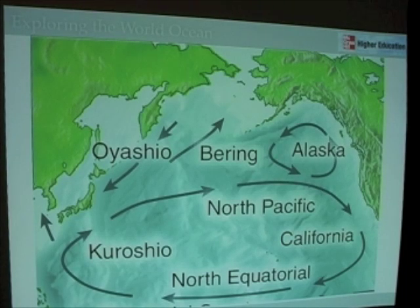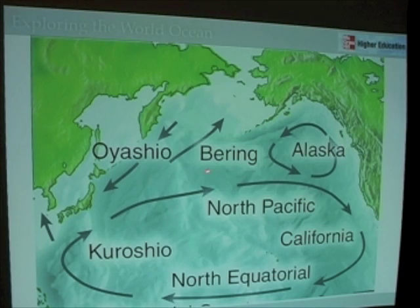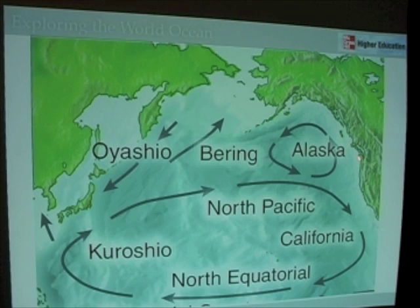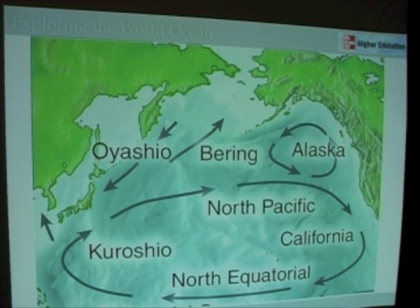Let's focus in on the North Pacific. The North Pacific current runs across the North Pacific Ocean, actually a little bit further north than shown in this figure. This Alaska subpolar gyre is displaced a little further north as well, because the North Pacific current actually runs into Vancouver Island, Washington and Oregon, where it splits north and becomes the Alaska current or Alaska gyre, and splits south and becomes the California current.